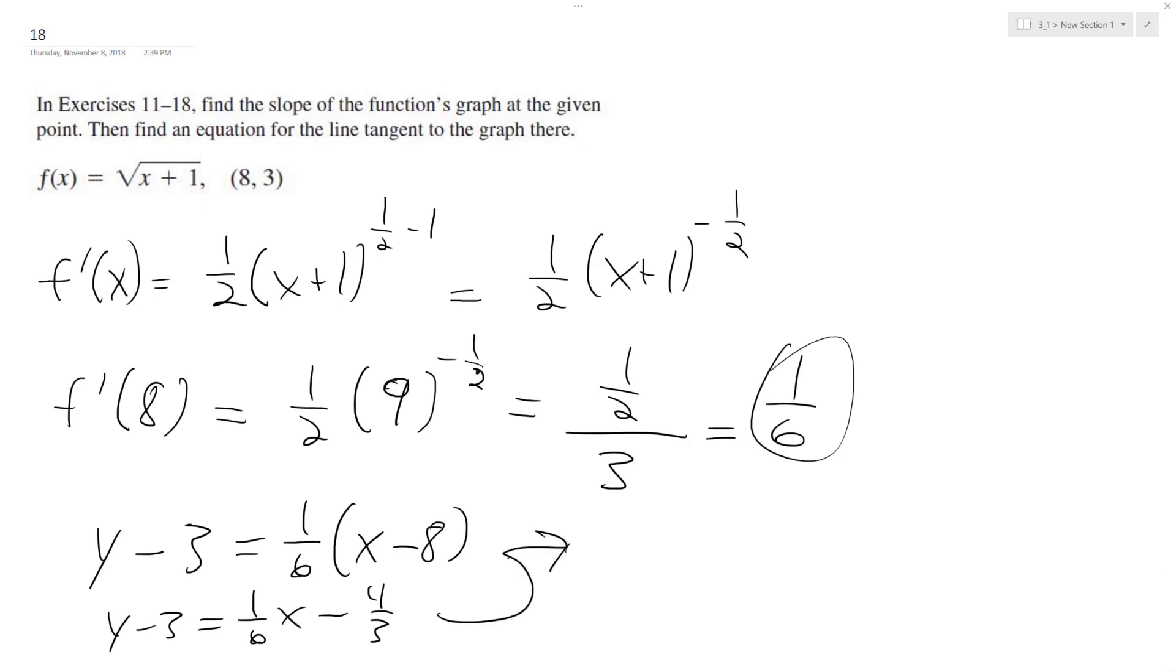So ultimately, what we're going to end up with here is, if you add 3 to both sides, if you convert 3 to denominator 3, so you get 9 over 3. So what we end up with is, y is equal to 1 sixth x plus 5 over 3.